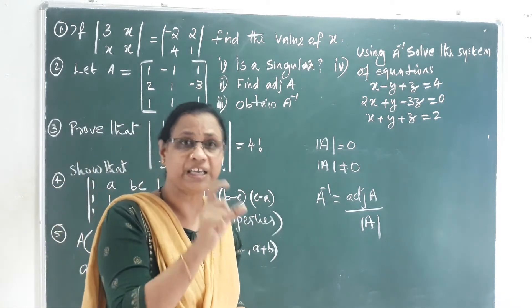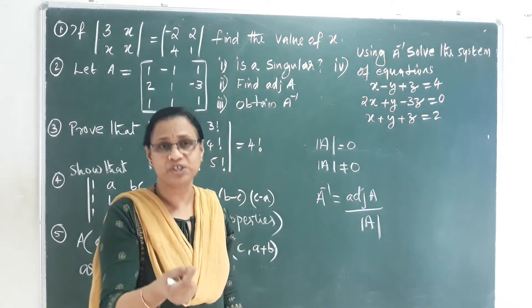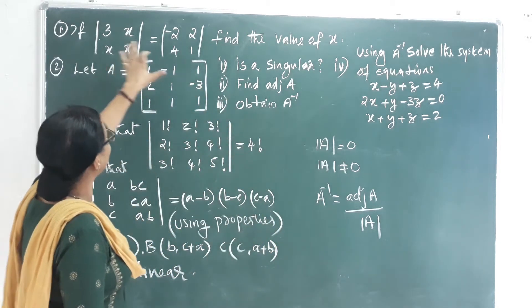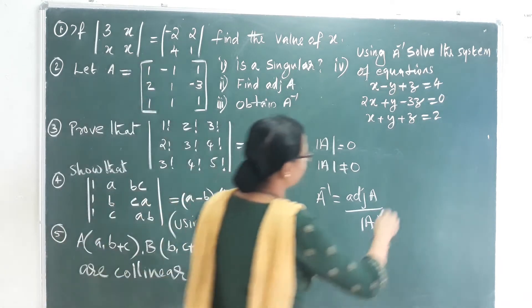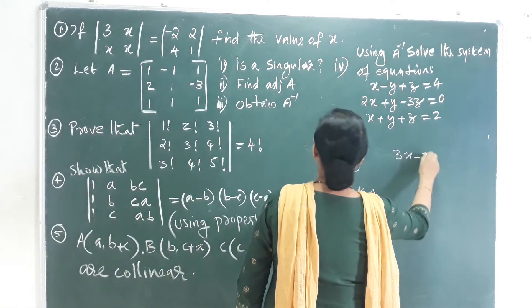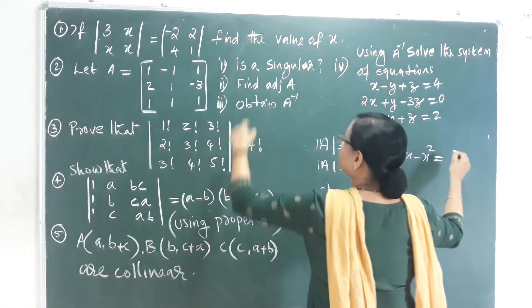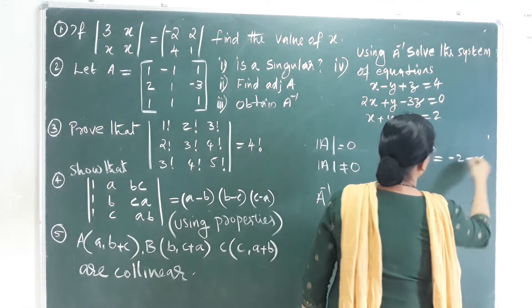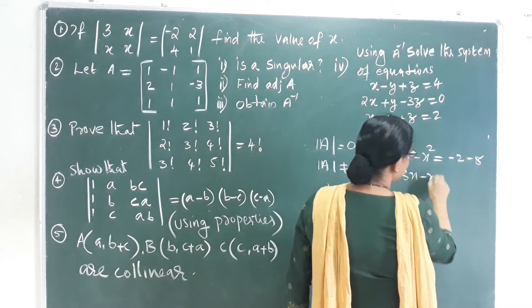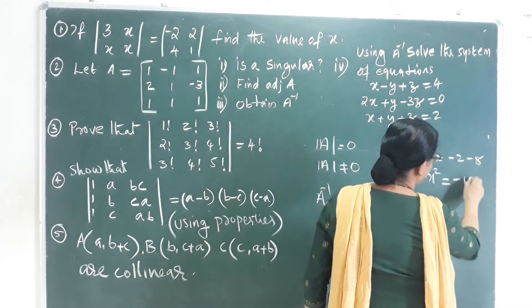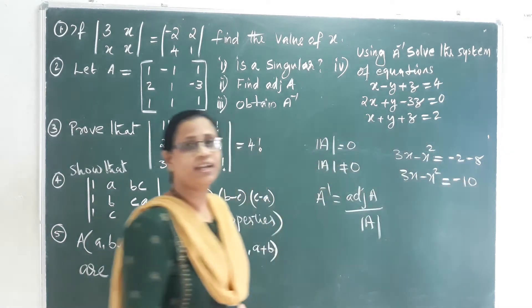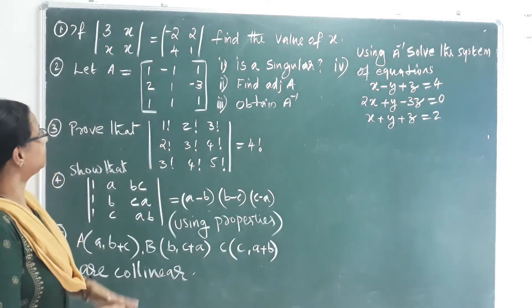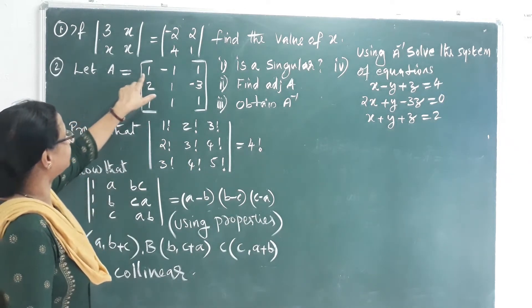Multiply the main diagonals and subtract the sub-diagonal products. We get 3X minus X squared equal to negative 2 times 1 minus 2 times 4, which gives negative 2 minus 8 equals negative 10. So 3X minus X squared equals negative 10. This is a quadratic equation which we solve to get the answer.